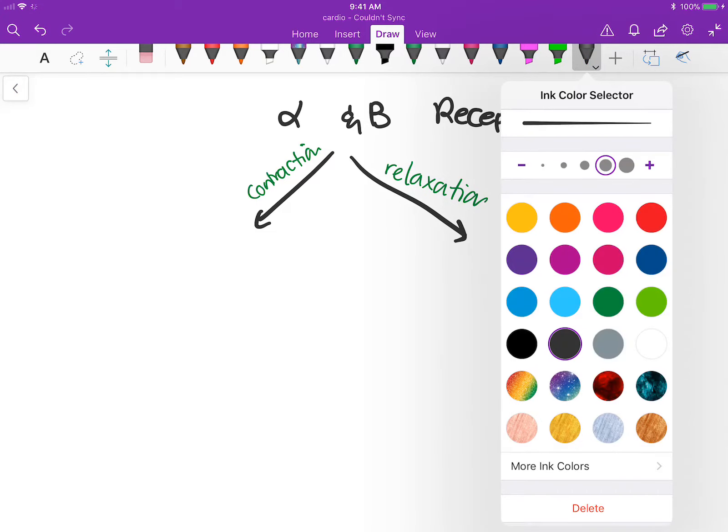You have alpha 1 and beta 1. Alpha 1 receptors are in all the smooth muscles, such as the ones in your veins and arteries. Beta 1 is mainly in the heart. I'm gonna draw a heart right here.